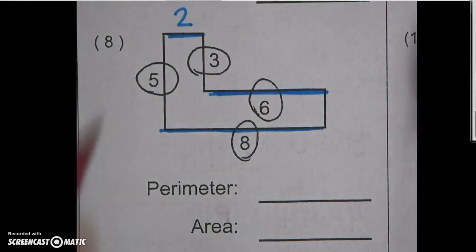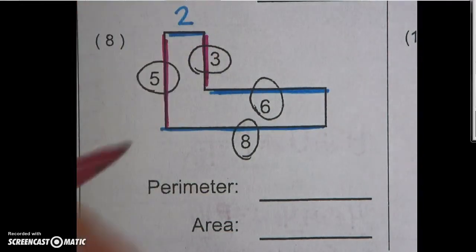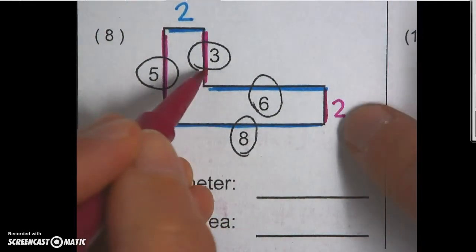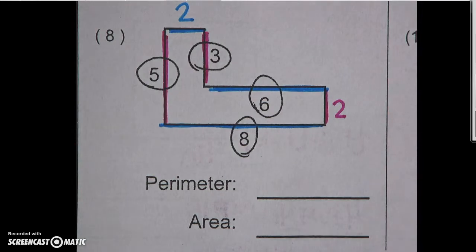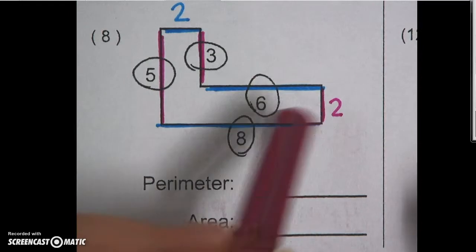Now I'm going to do my length. My whole length here is 5. This piece of it is 3. So this chunk must be 2, because 3 plus 2 is what's going to give me 5. So to find my perimeter, I'm going to add up all of my measurements that go around the outside.